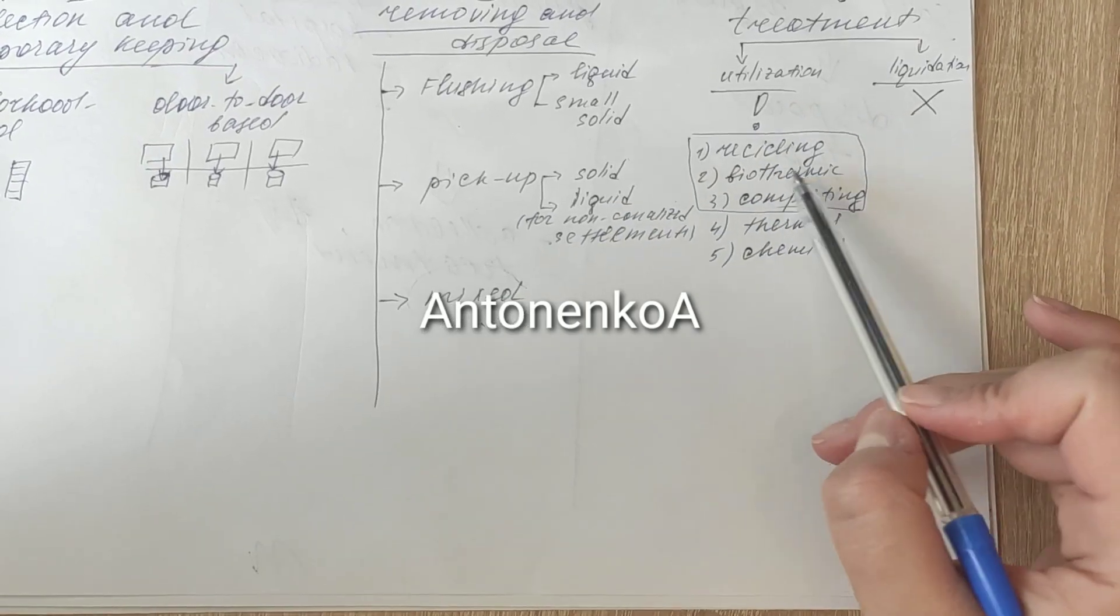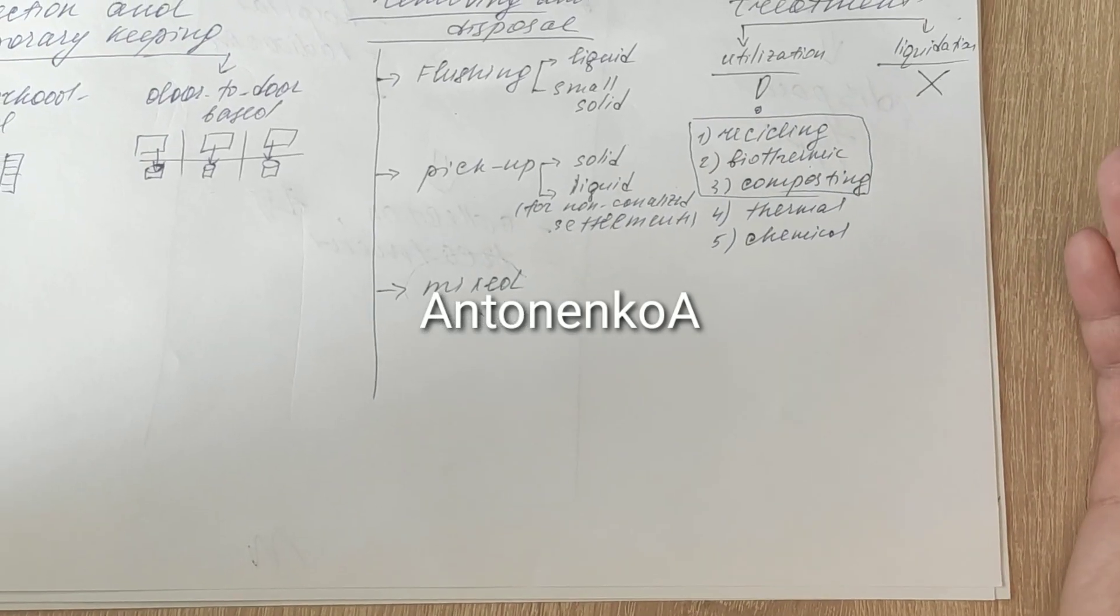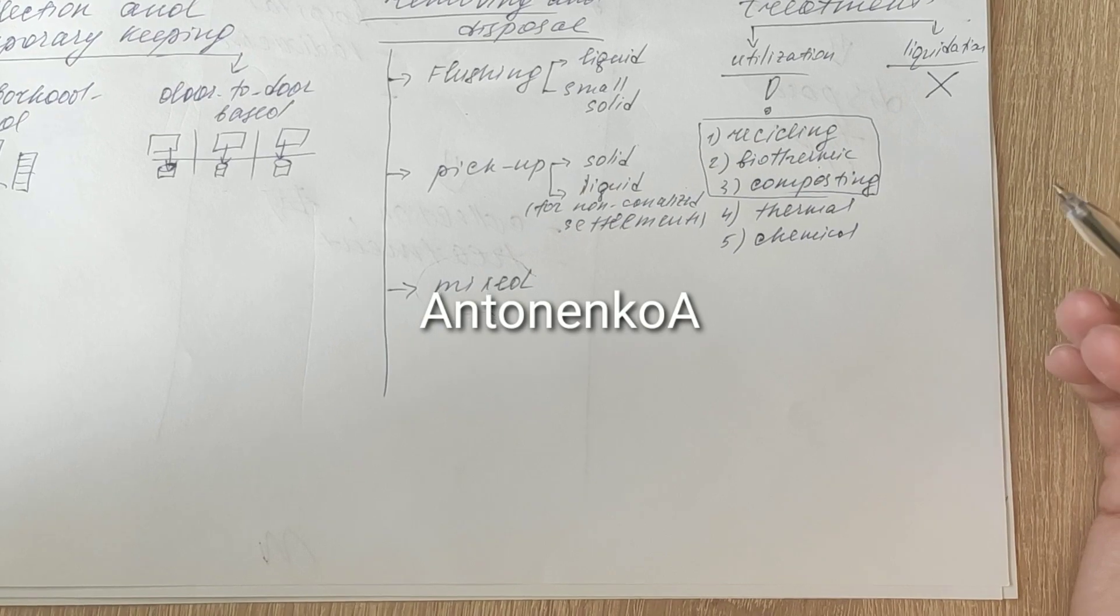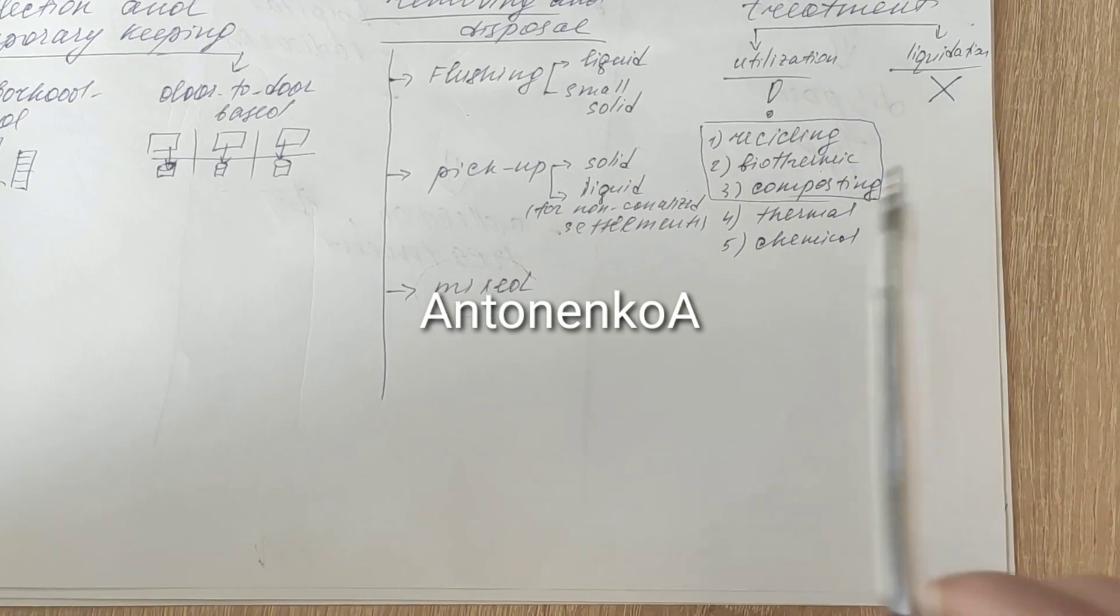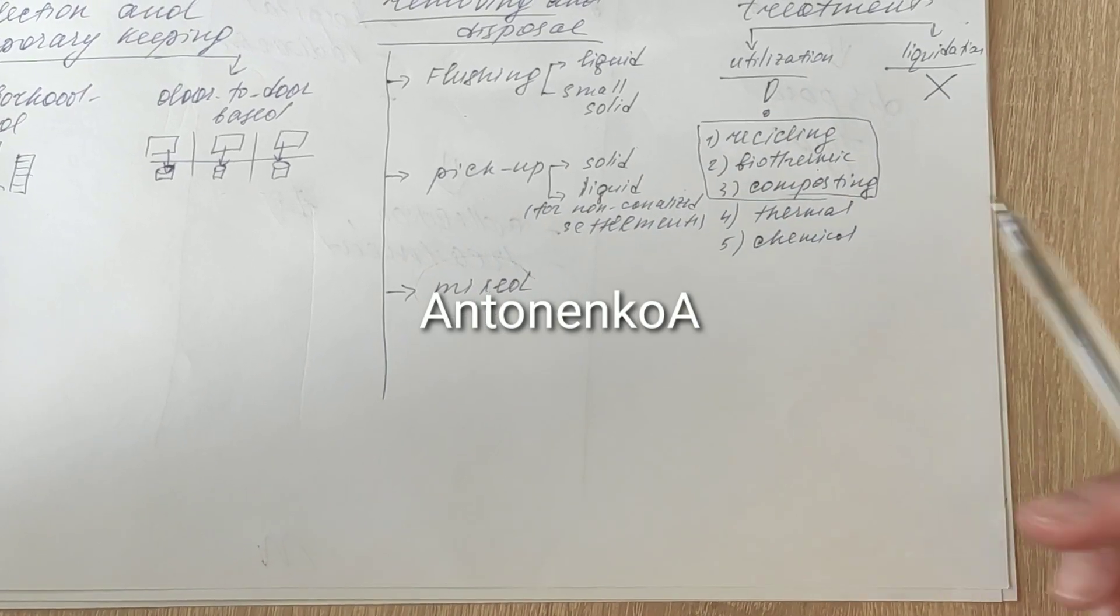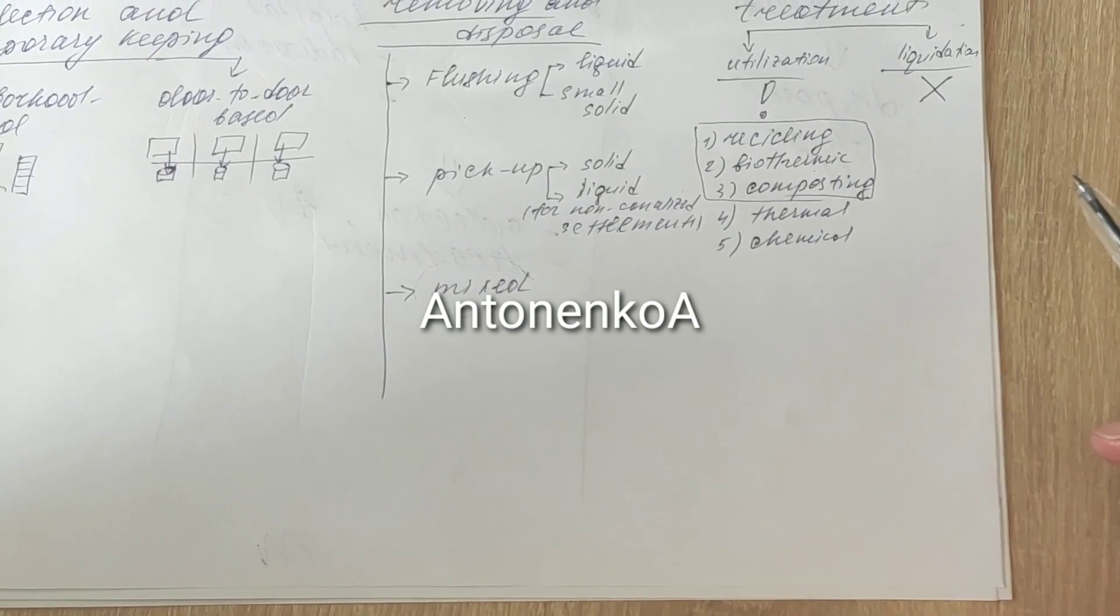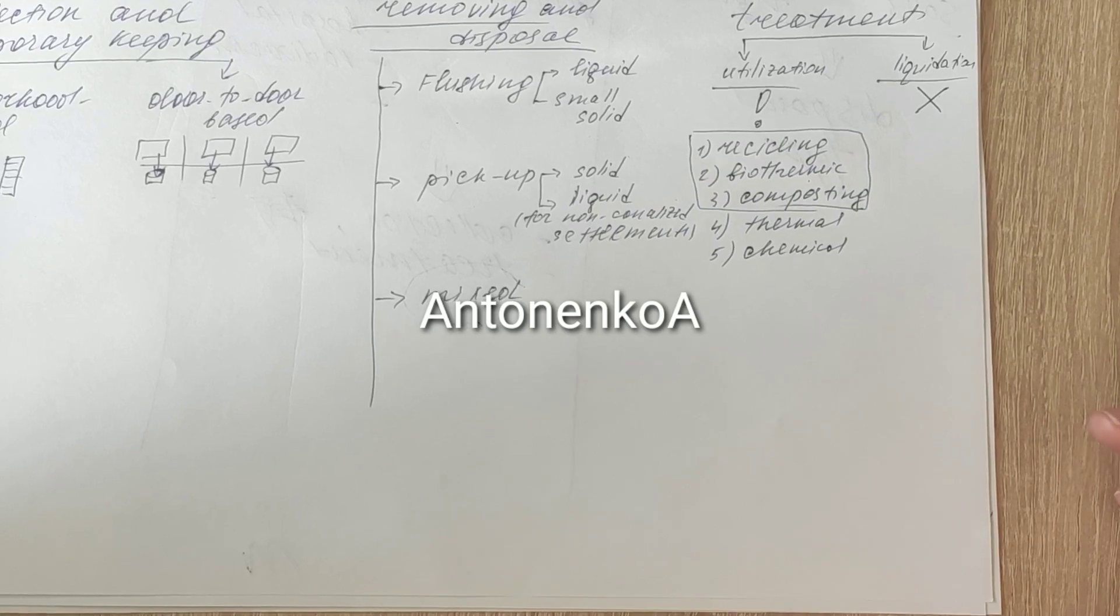Biothermic. It's also recycling but for organic waste. When organic waste converts into energy and some chemical compounds which could be used further in chemical industry, for example. Composting, it's also for organic substances, making the fertilizers, natural fertilizers.